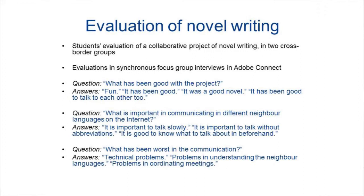When the teacher asks what has been good with the project, the students answer: 'Fun. It has been good. It was a good novel. And it has been good to talk to each other too.' The second question, when the teacher asks what is important in communication in different neighbor languages on the internet, the students answer: 'It is important to talk slowly. It is important to talk without abbreviations. And it is good to know what to talk about beforehand.' The third question from the teacher is: 'What has been worst in the communication?' And the students answer: 'Technical problems. Problems in understanding the neighboring languages. And problems in connecting to meetings.'